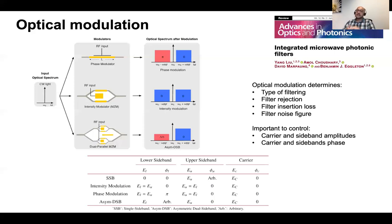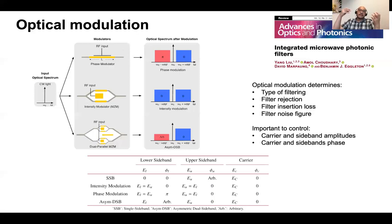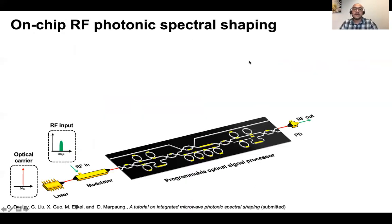For a filter, the phase and amplitude relation dictates the type of filtering, the rejection, insertion loss, and eventually noise figure. It will be critical for microphotonic systems to be able to synthesize a modulated spectrum with a tailorable phase and amplitude relation between the optical carrier and the sidebands. This is one of the key concepts we want to push forward in this talk.